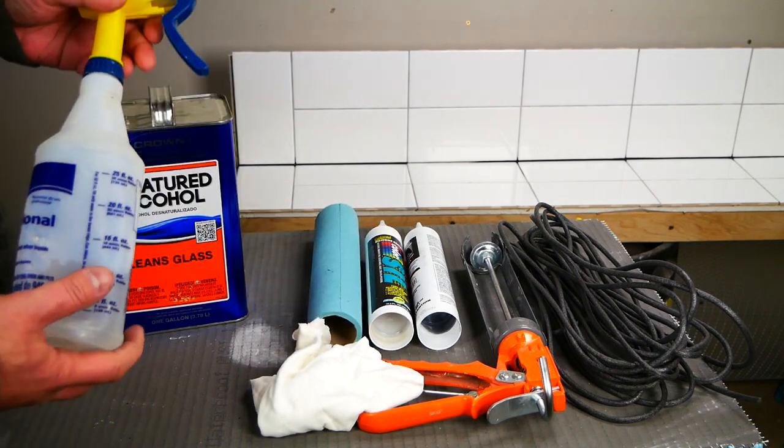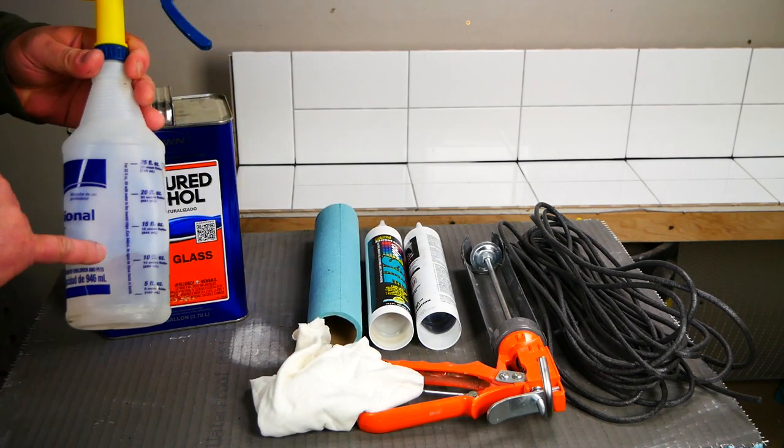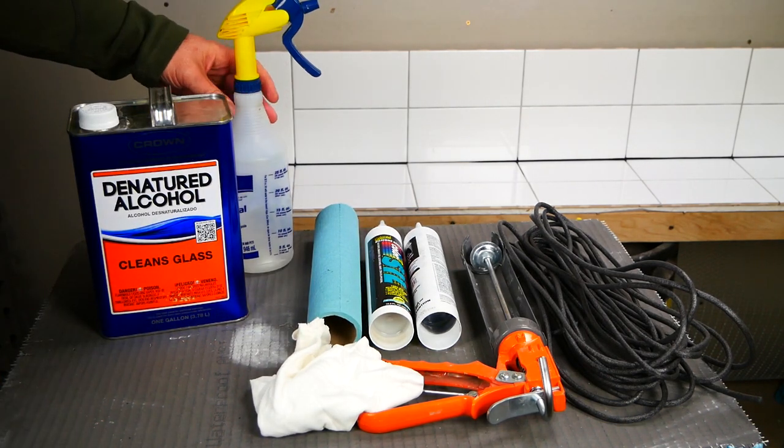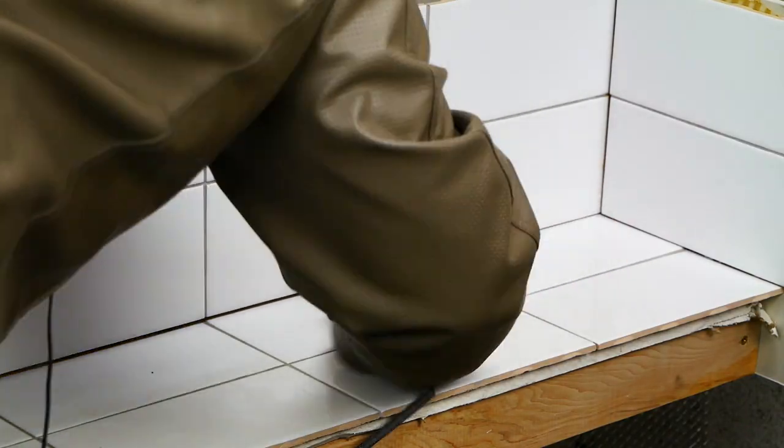Take the alcohol and put it in the spray bottle like you see here. The first thing you want to do is spray the alcohol on the rag and just clean the caulk joint. Make sure there's no dirt or anything that will keep the silicone from sticking.